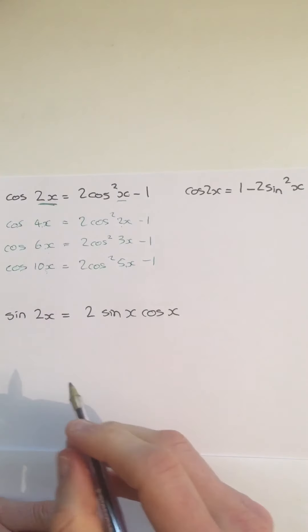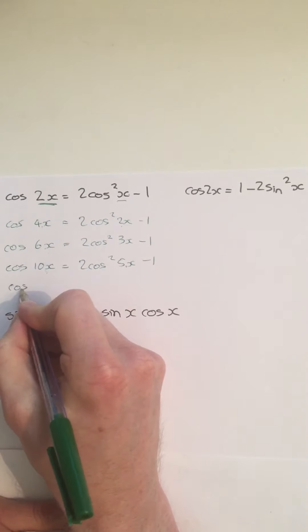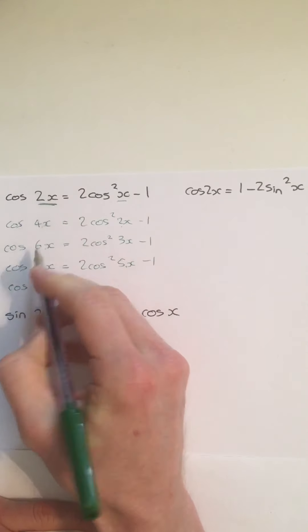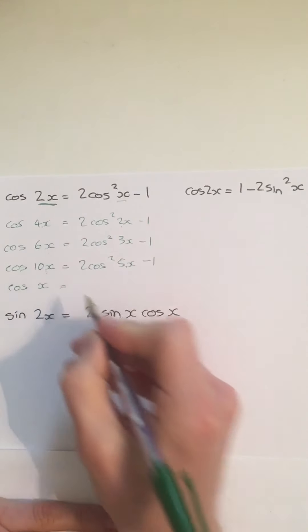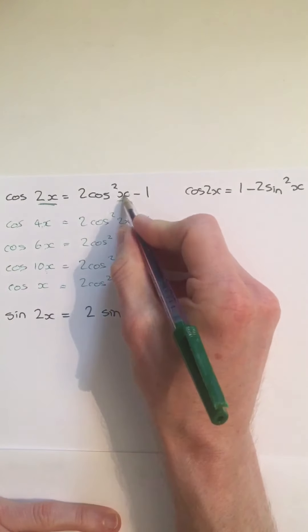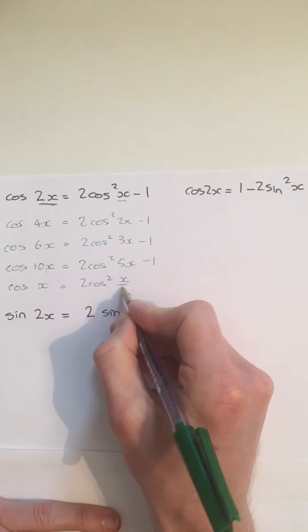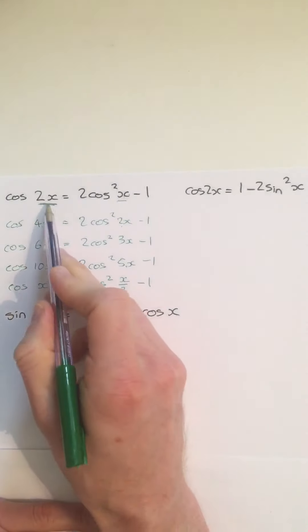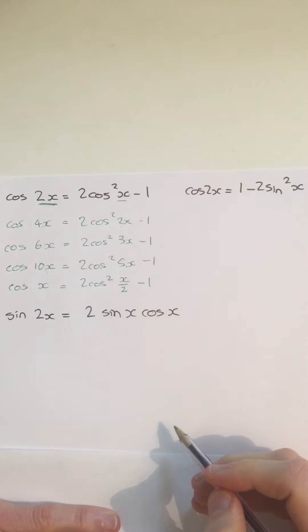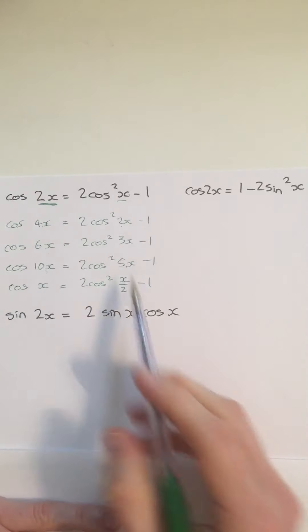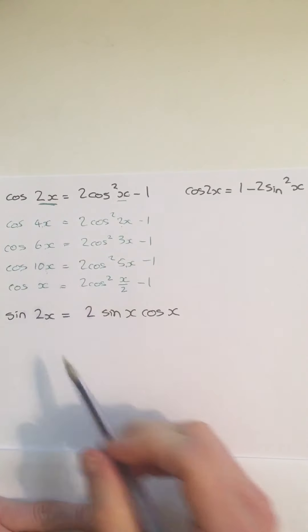And we could actually decide to half both of them. So I could say cos x, halving the 2x to get x, is equal to 2 cos squared x over 2 minus 1. So we could half both of these as well. As long as we keep them in proportion, you can apply this rule to all sorts of other angles.